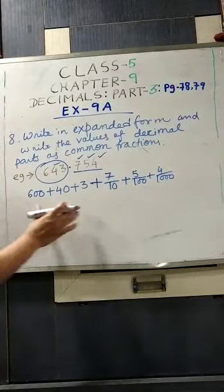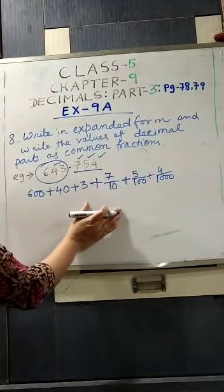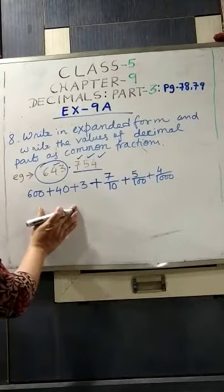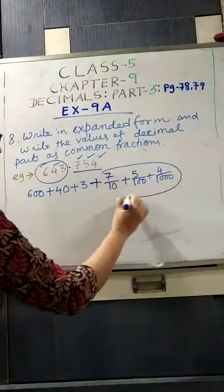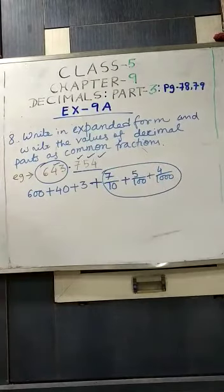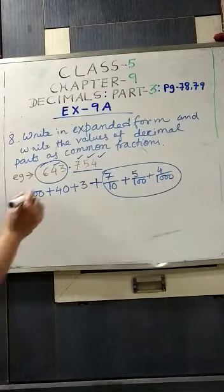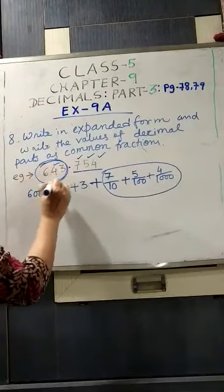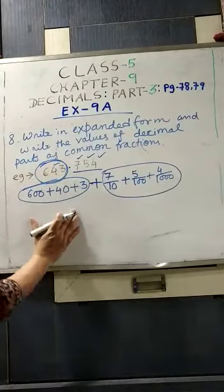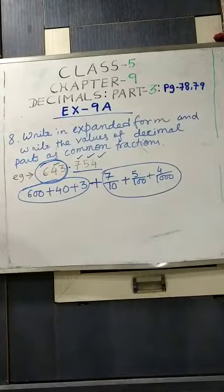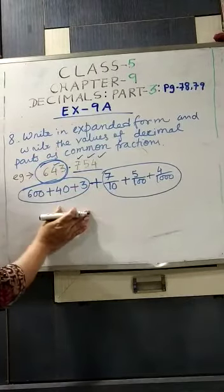Plus next digit 5, 5 is in hundredth place, the second position after decimal, so 5 by 100. Then 4, the last one, 4 is in third position after decimal, that means thousandth, so 4 by 1000. So in this way you will have to write the expanded form and the values of the decimal parts as common fraction. You can see that I have written this as common fraction. But the whole number 643, we will have to expand this number in this way. I hope that you have understood.